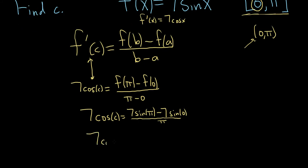So you have 7 cosine c equals, so 7 sine of π, let's think about sine. So on the unit circle, sine is the y-coordinate. So at π, the y-coordinate is 0. Likewise, at 0, the y-coordinate is 0. So the whole top is going to be 0, so it's 7 times 0 minus 7 times 0 over π. So that's just 0 over π, which is equal to 0.